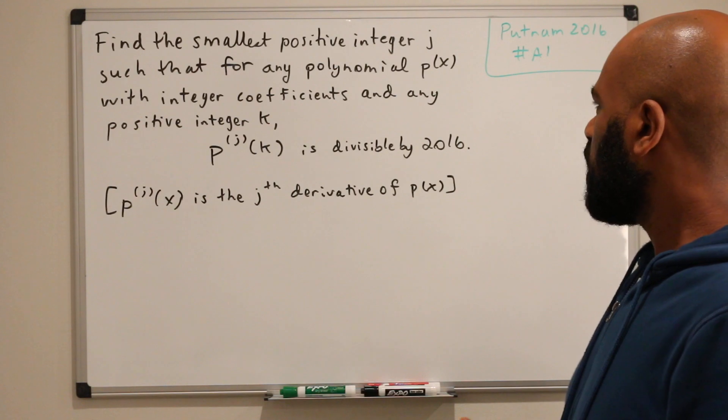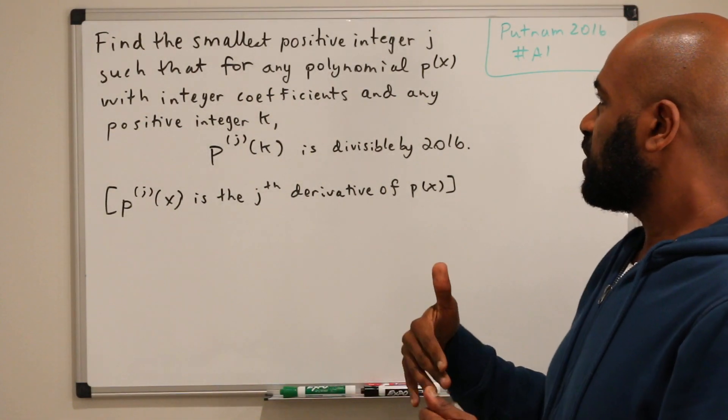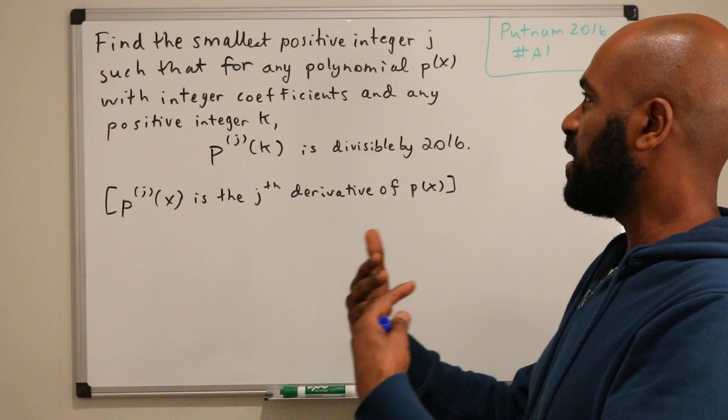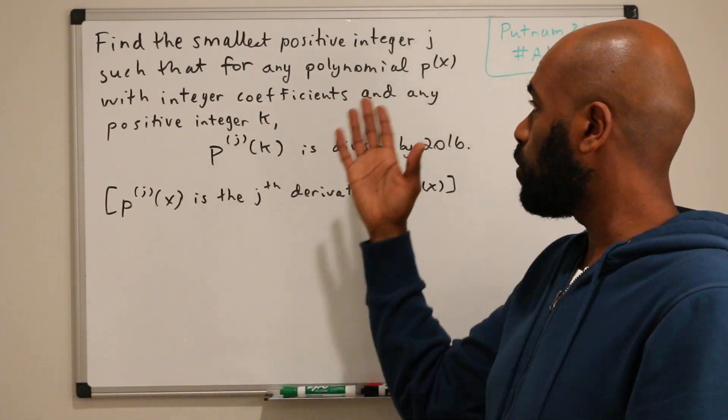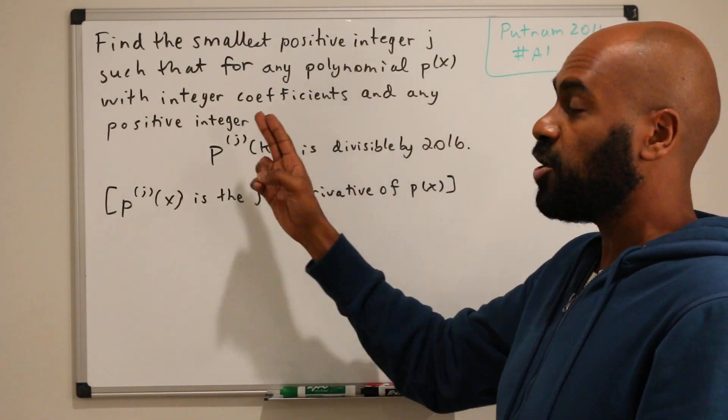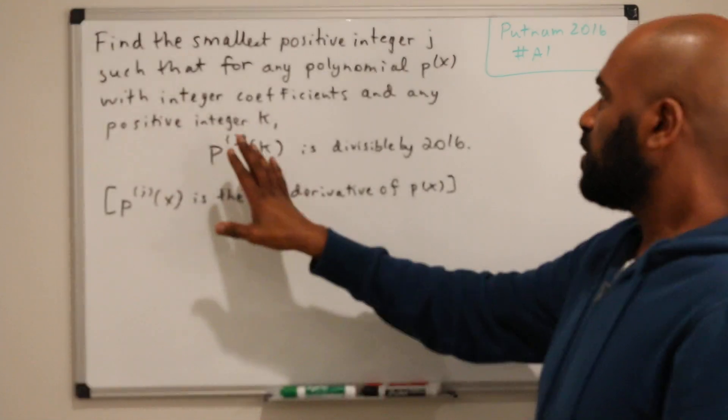Okay, so there are a lot of moving parts here. We have this smallest positive integer so that when we differentiate no matter what polynomial we're looking at, no matter what integer we plug into it, the jth derivative evaluated at the polynomial is going to be divisible by this number 2016.